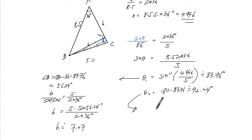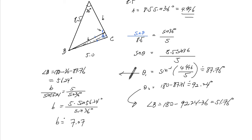If it was this, then angle B will be 180 minus 92.24 minus 36, 51.76.